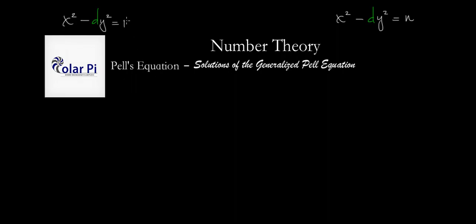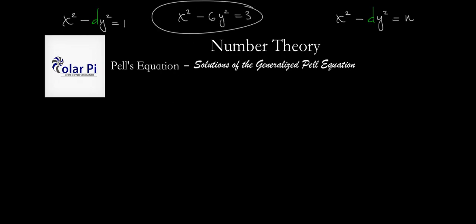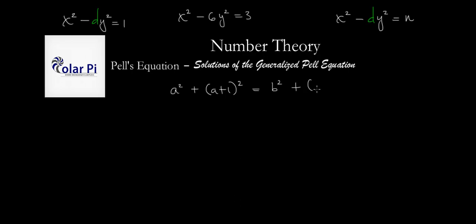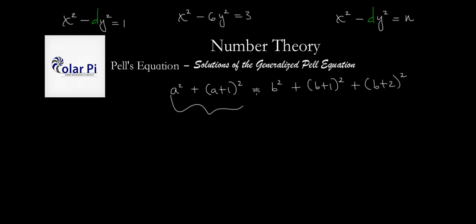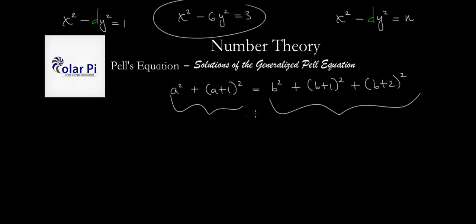As opposed to requiring n equal to 1, in this video we're going to allow n to be different from 1. Towards the end of this video, I'll give you an example of how to solve x squared minus 6y squared equals 3, which is interesting because solving it is related to finding a and b so that a squared plus (a+1) squared equals b squared plus (b+1) squared plus (b+2) squared. My next and final video will be dedicated to that connection. So look out for that video.